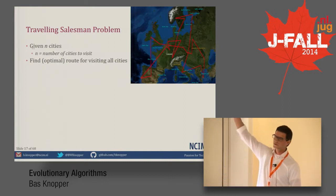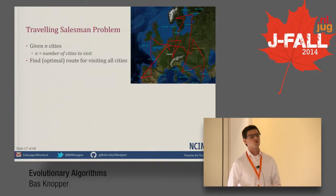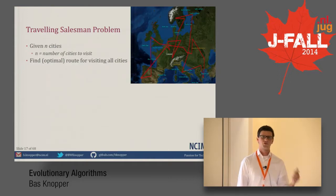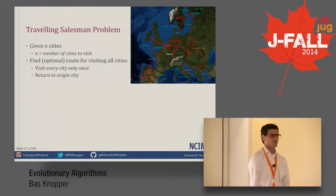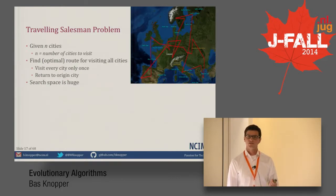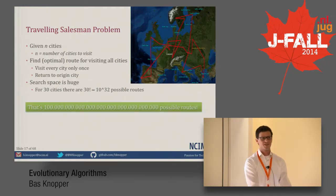You have to visit every city only once and return to the origin city — that's basically the traveling salesman problem. It sounds easy enough, but the search space is huge. For 30 cities, there are 30 factorial — that's 10 to the power of 32 possible routes. I don't even know how to pronounce this number. Brute force might not be the best solution in this case.